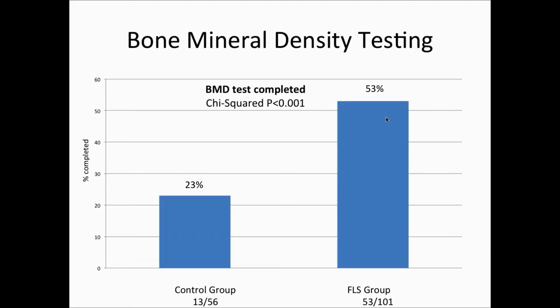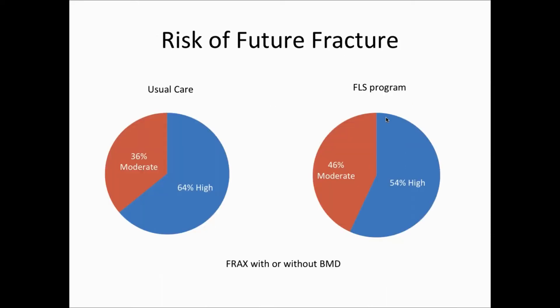Looking at the distribution of fracture types in our study patients, most were wrist fractures. For bone mineral density results, 23% in the control group compared to 53% in our FLS group had BMD testing done. These numbers may look small, but we did not do testing in anyone who'd had a bone density test in the last three years, and we didn't do bone density testing in any hip fracture patients because they were automatically scored as high risk. Looking at appropriate BMD testing, it was about 33% in our control group and 82% in our FLS group.